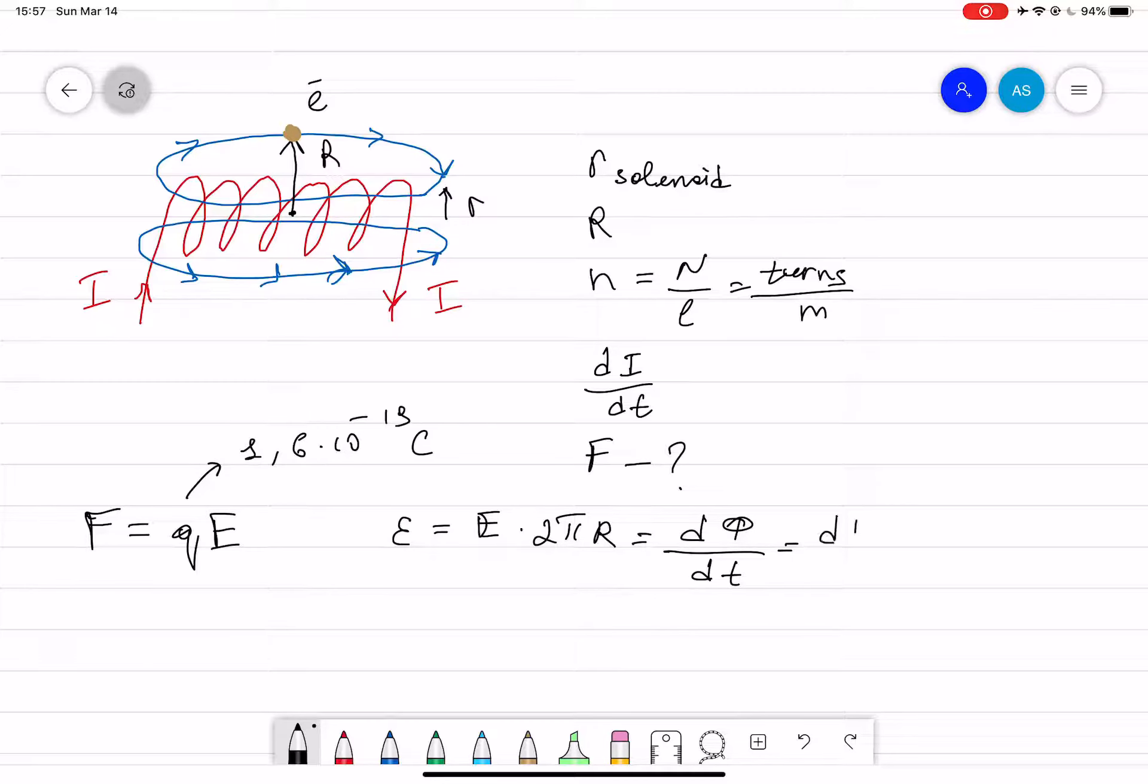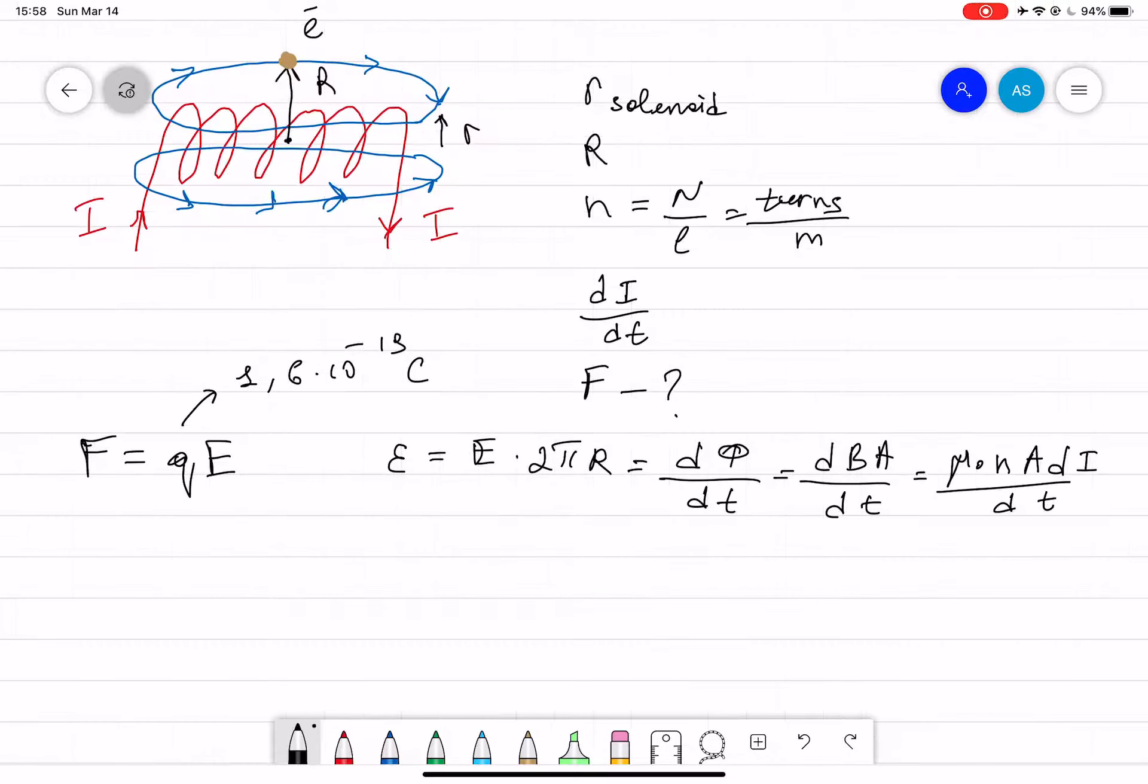Now dΦ equals dBA divided by dt. Now B is equal to what? R is constant, it's not changing. So B equals μ₀ times number of turns per unit length times I. So I is changing current, that means I put here dI over dt.